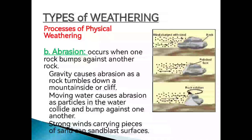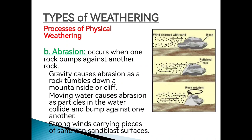The second process is abrasion — when one rock bumps against another rock. Gravity causes abrasion as a rock tumbles down a mountainside or cliff. Due to their weight, rocks fall and bump against other rocks. Aside from gravity, moving water also causes abrasion as particles in the water collide and bump against one another. In the ocean, for example, rocks carried by waves experience abrasion as they bump against each other.